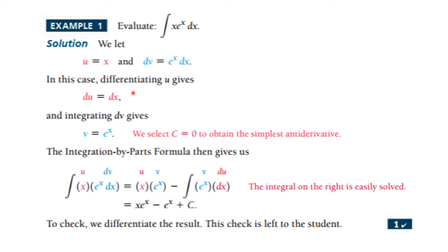Now we'll use the formula, because this is the integral of what we called u and what we call dv. So this is equal to uv minus the integral of v du. This integral is just x eˣ, and when we integrate this we get eˣ plus c. You can check by differentiating the result.